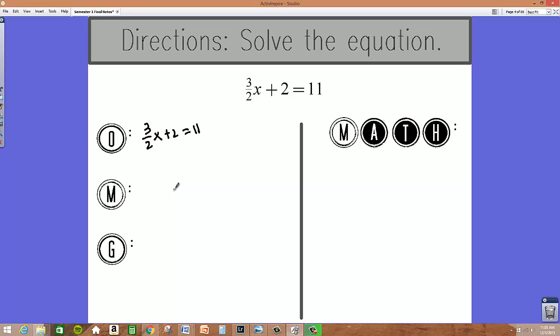We also observe that we have a couple of operations. We are adding 2 to x and we are also multiplying x by 3 halves. So this would be a two-step equation.